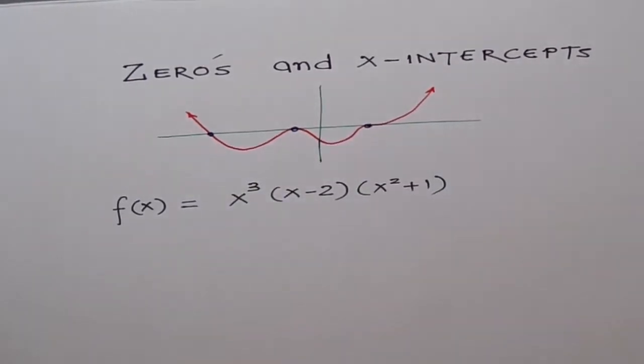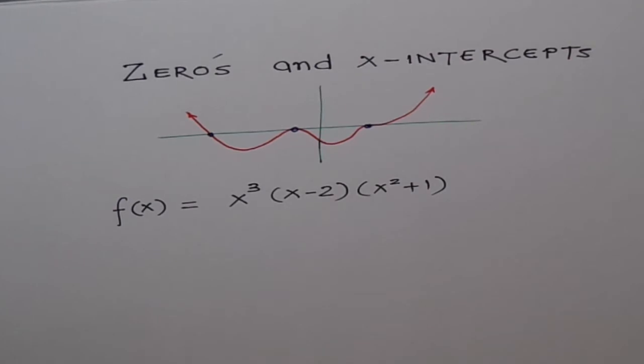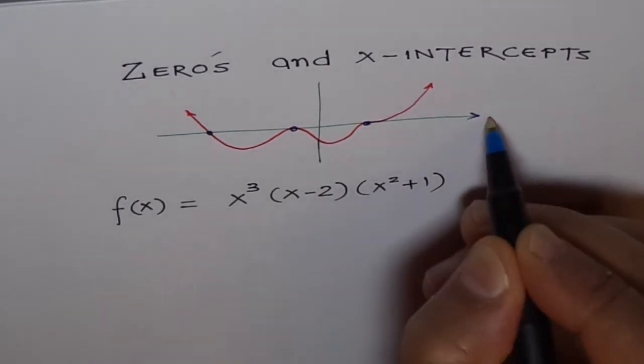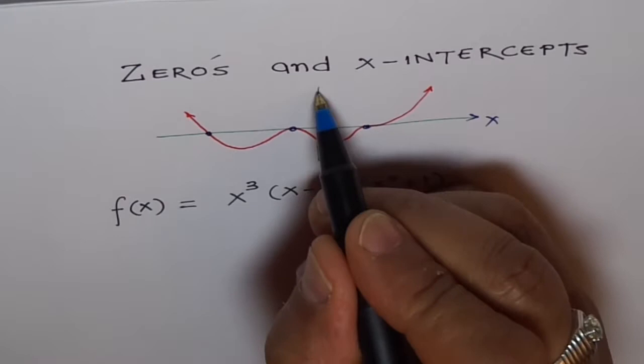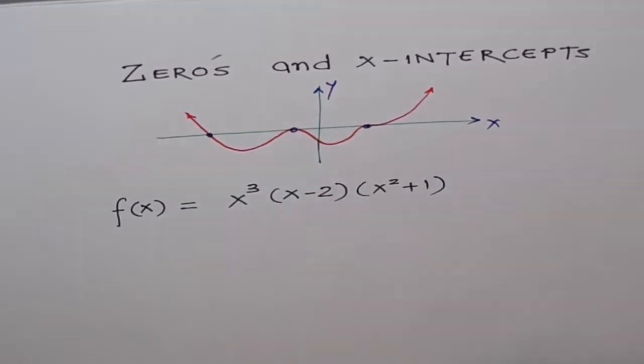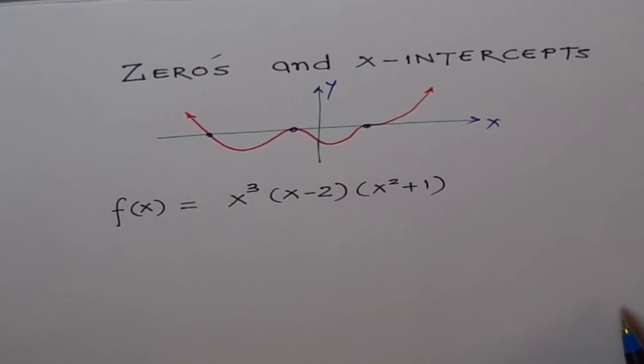Now since the value of the function at these points is zero, we call them zeros, but since they cross the X axis or they touch the X axis, they are also called X intercepts. Therefore, X intercepts and zeros are used interchangeably.